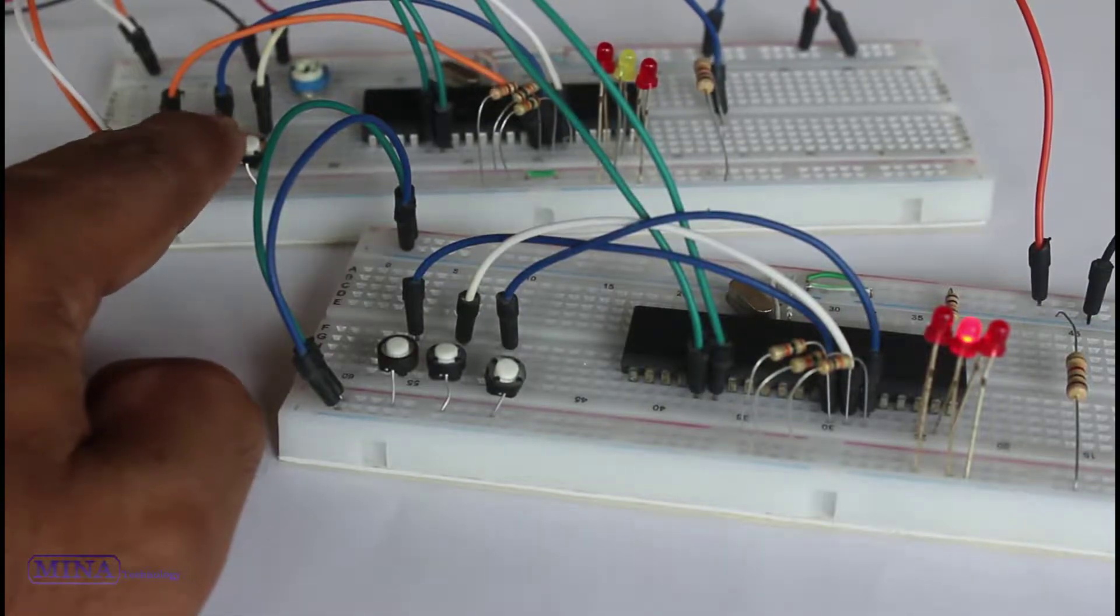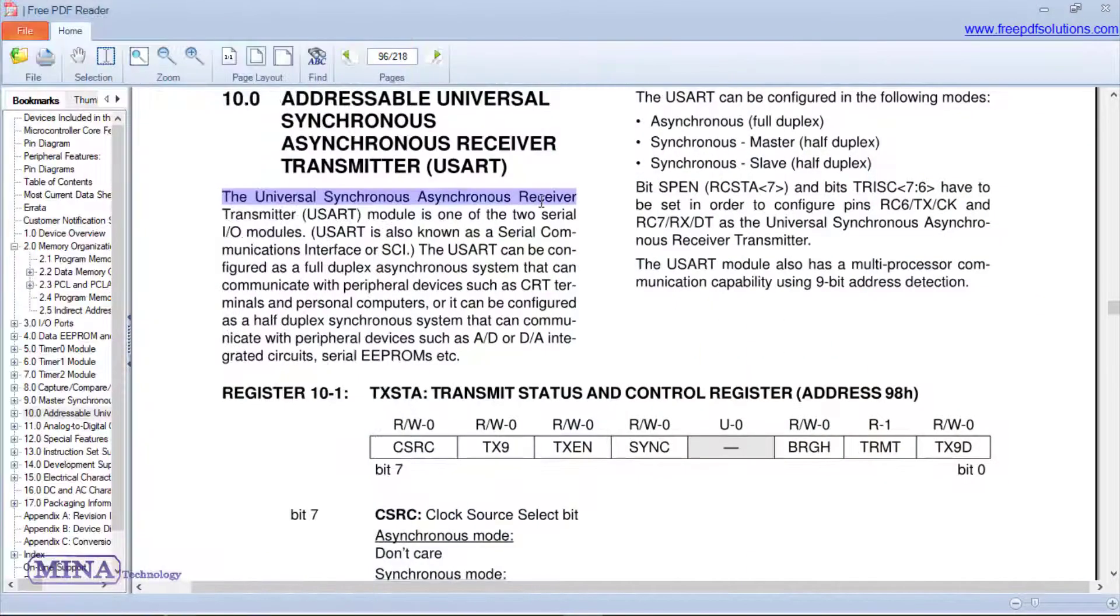Now let's take a closer look at the USART module. The Universal Synchronous Asynchronous Receiver Transmitter USART module is one of the two serial input-output modules. USART is also known as a serial communication interface or SCI.